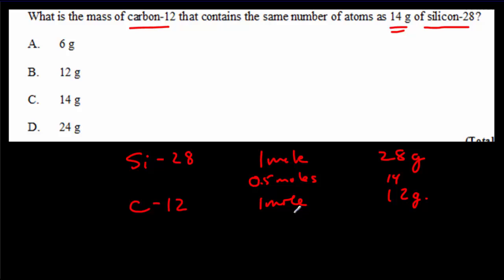And we want it to have exactly the same number of particles, the same number of atoms, and therefore we would like to have 0.5 moles of carbon-12, so that we've got the same number of atoms. And that means we're going to have to have half of 12 grams, or 6 grams, and the correct answer here is A.